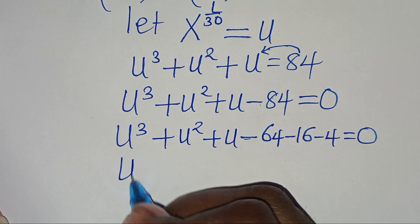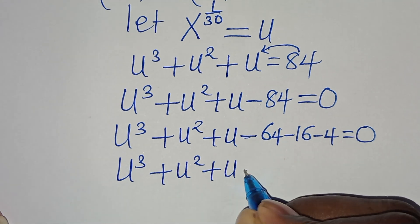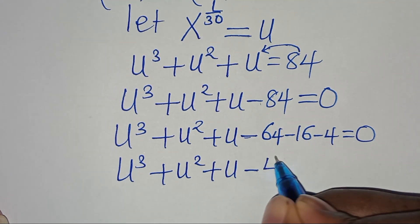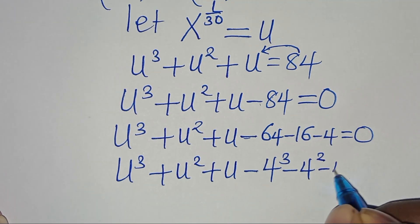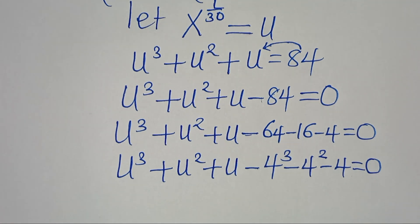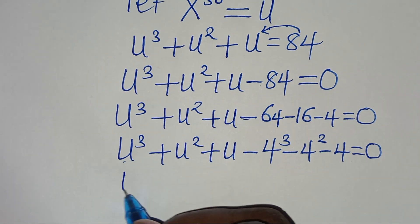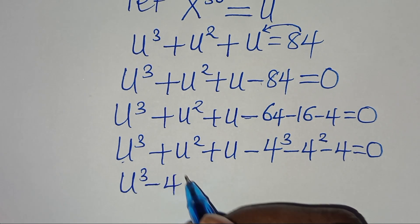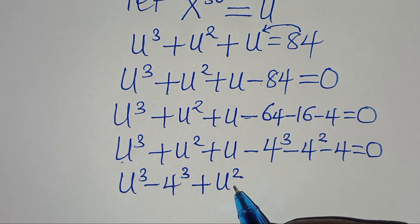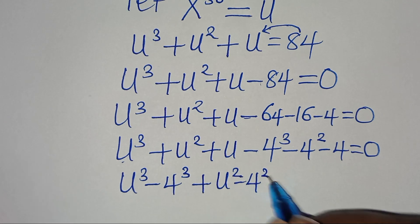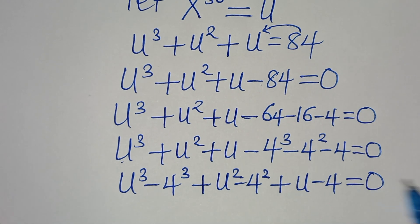We have u cubed plus u squared plus u minus 64 — which is 4 to the power of 3 — minus 16, which is 4 to the power of 2, subtract 4, equals 0. This gives us u cubed minus 4 cubed, plus u squared minus 4 squared, plus u minus 4, equals 0.